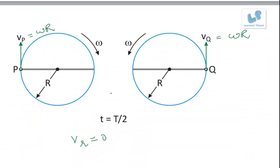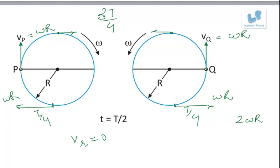If we take the case when they are here at t by 4, what will happen? They will have maximum speed because this omega R and this omega R are in opposite directions, so the relative speed will be 2 omega R. Similarly at 3t by 4, their speeds will be same but opposite in direction, so total is omega R and omega R equals 2 omega R.